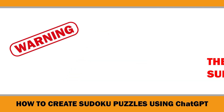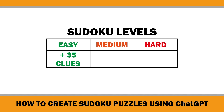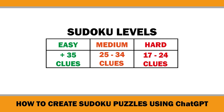My second warning relates to the difficulty levels of Sudoku puzzles. They are generally categorized into three levels: easy, medium, and hard. This classification is based on the number of clues provided, the techniques required to solve the puzzles, and their overall complexity. Easy puzzles typically have 35 or more clues, medium puzzles range from 25 to 34, and hard puzzles usually feature around 17 to 24. My initial prompt asked for an easy puzzle, but the generated puzzle contained only 30 clues. It might be helpful to specify the clue count in your prompt, such as: please generate an easy 9x9 Sudoku puzzle with 35 clues.